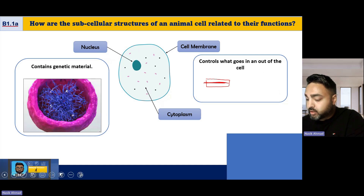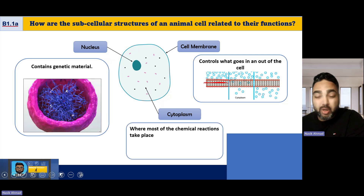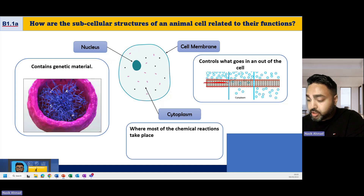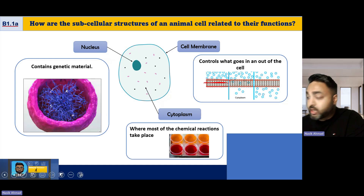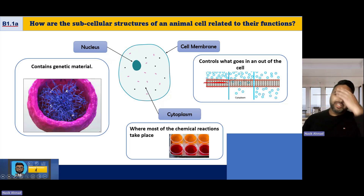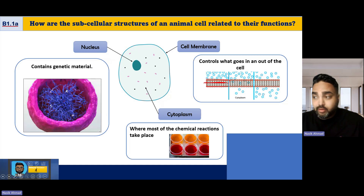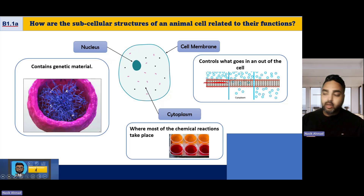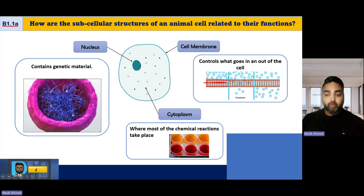The cytoplasm is essentially where most of the chemical reactions take place — not respiration, not photosynthesis, but most of the other ones. The cytoplasm is kind of like a jelly-like structure. If you think of a water balloon filled with jelly, it holds the cell together, though it's not as strong as, say, the cell wall.